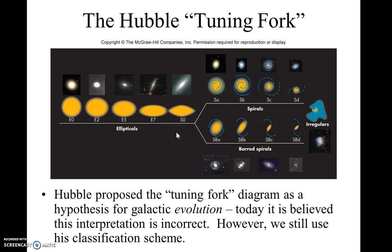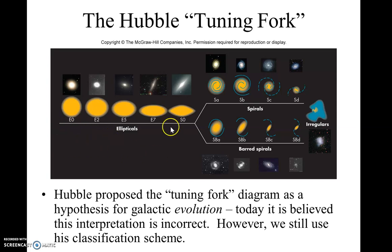I'll talk about this more in the next video because I'm almost out of time here. But this is the famous tuning fork diagram, where you have ellipticals, spirals, and barred spirals.